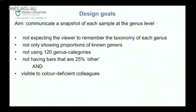My aim was to communicate an image of each sample at the genus level, as well as to handle the common problem in data visualisation of having small categories — genera present in small proportions. In microbiome analysis, lots of things are incompletely labelled. We had 117 different genus-level categories in our samples, of which 66 were assigned to a particular genus. Half of the top 10 microbes — we didn't know the genus. So I wanted genus-level detail without expecting the viewer to remember the taxonomy of each genus, without having 120 colours, and without having a quarter of the bar unknown.